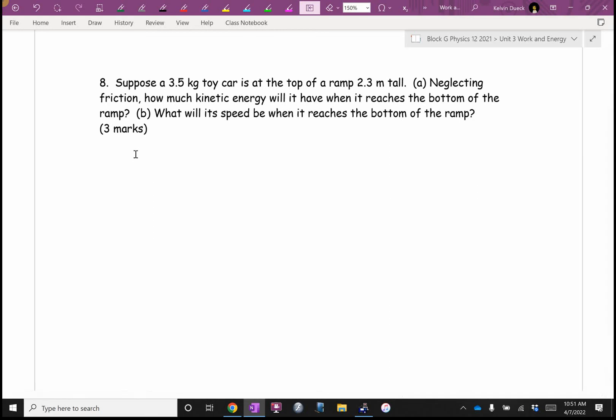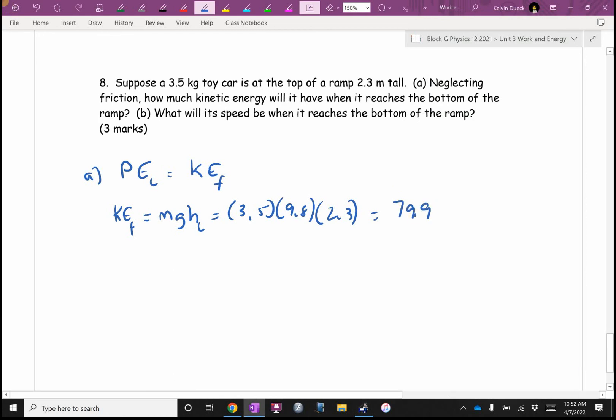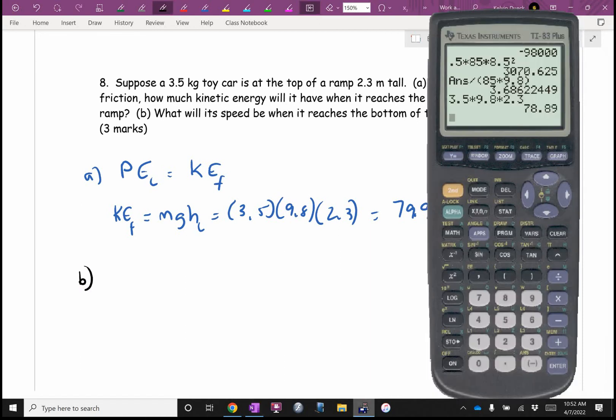Suppose a toy car is at the top of a ramp. If we ignore friction, how much kinetic energy will it have at the bottom? I think what we're arguing here is all of the initial potential is going to turn into all of the final kinetic. So I can't tell you what the final kinetic energy is, but I can find what the initial potential energy is, and that'll be the same answer. The final kinetic energy is going to be mgh initial, because it's the same as the initial potential. It's going to be 3.5 times 9.8 times 2.3. And I get 78.9 joules of energy.